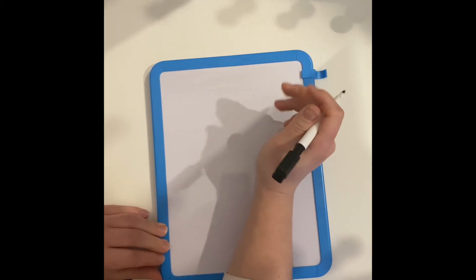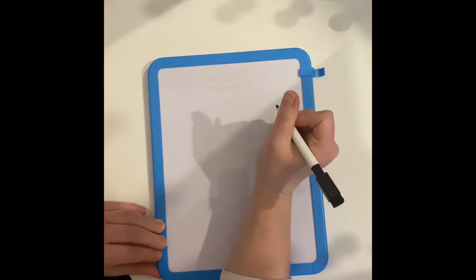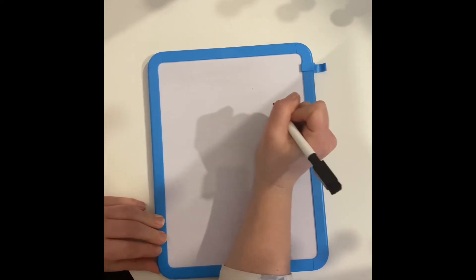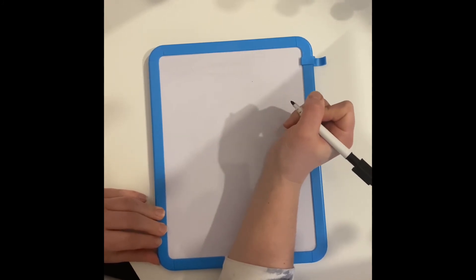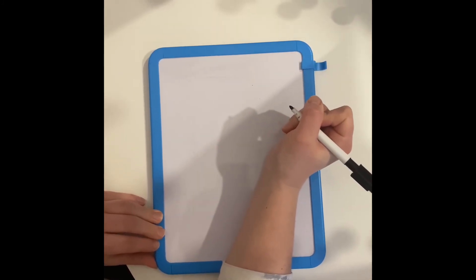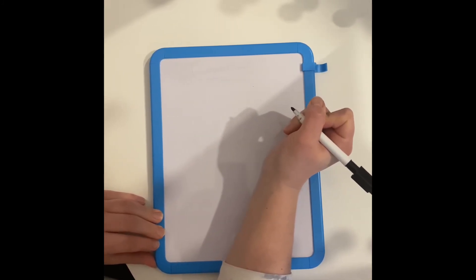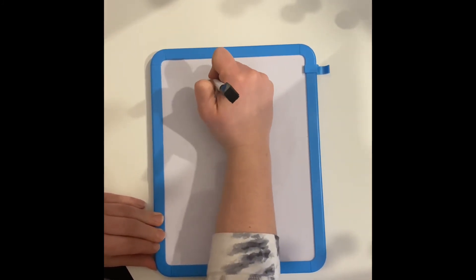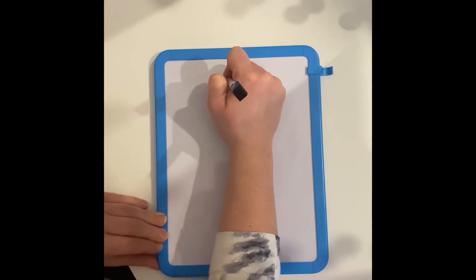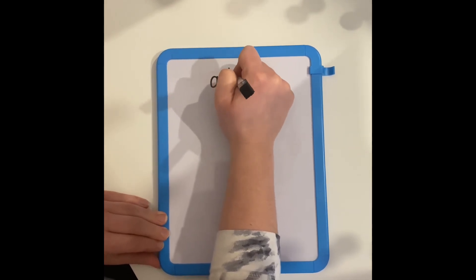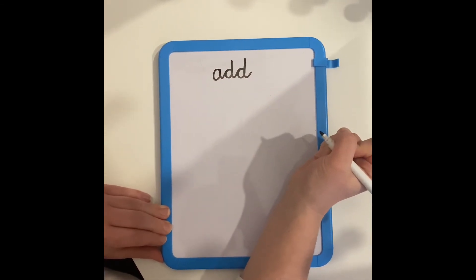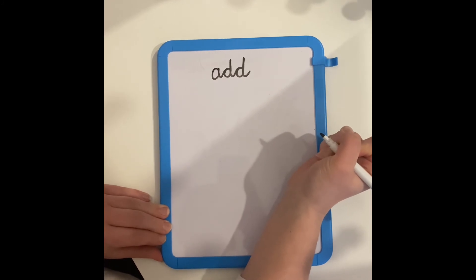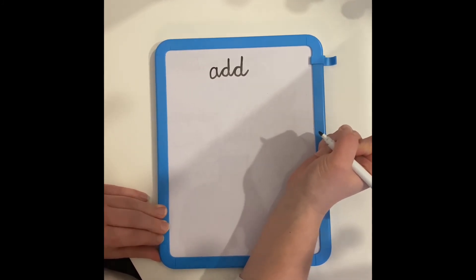For the first part of today's lesson, our big question is: can I use a column method to add five and four digit numbers? The first thing I'd like you to do is think of as many synonyms as you can for the word 'add'. Pause the video now and make a note of as many synonyms for add as you can think of.